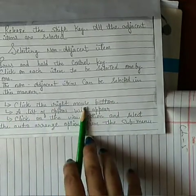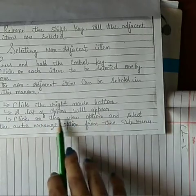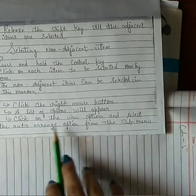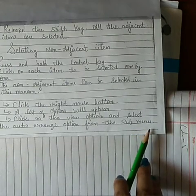And answer number fifth: Click the right mouse button. Second: A list of options will appear. Click on the view option and select the auto-arrange option from the submenu. So, these are your question answers. Now, the chapter five is finished.